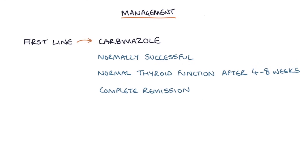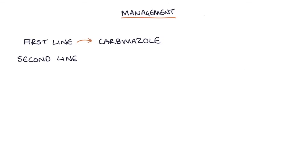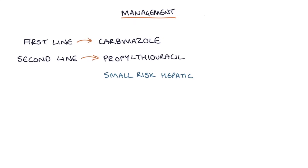Complete remission and the ability to stop carbamazole is usually achieved after about 18 months of treatment. The second-line treatment is propylthiouracil, used in a similar way to carbamazole, but there is a small risk of severe hepatic reactions that can be fatal, which is why carbamazole is the preferred option.